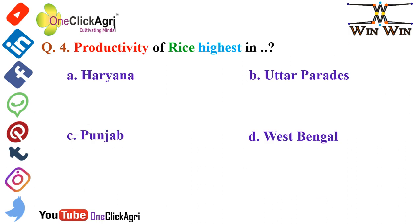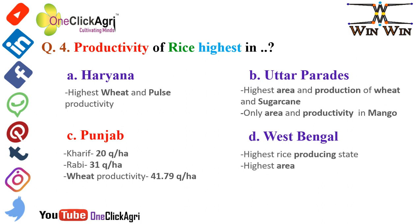Productivity of rice is highest in Punjab. The productivity of rice for the Kharif crop is 20 quintal per hectare, and Rabi is 31 quintal per hectare. In the same Punjab state, wheat productivity is 41.79 quintal per hectare — please remember this. The other options: Haryana has the highest wheat and pulses productivity. Uttar Pradesh has the highest area and production of wheat and sugarcane, and the highest area and productivity of mango. West Bengal is the highest rice producing state and has the highest area of rice.